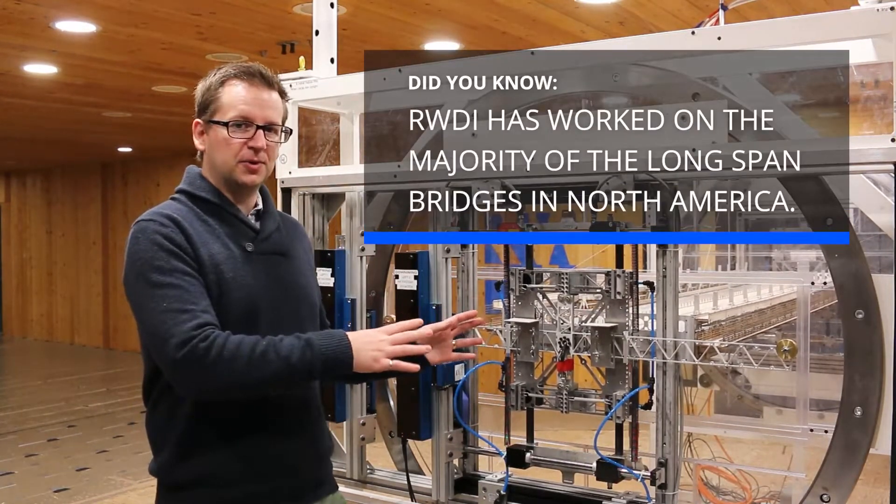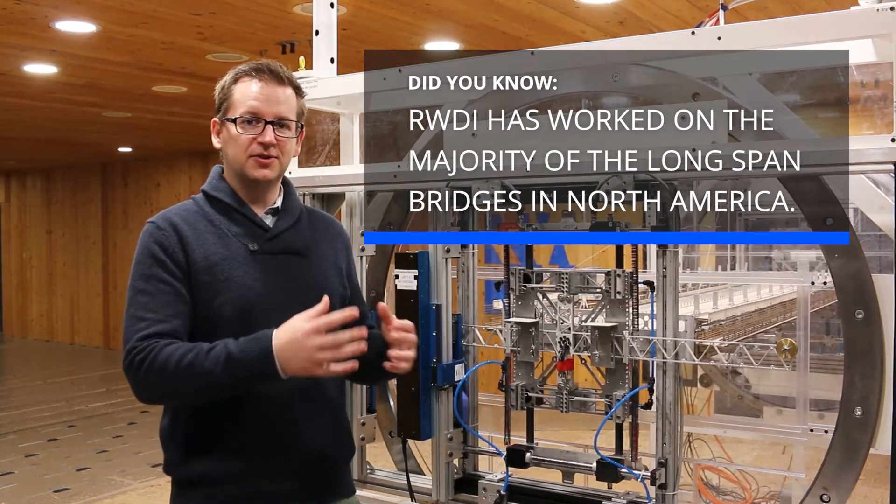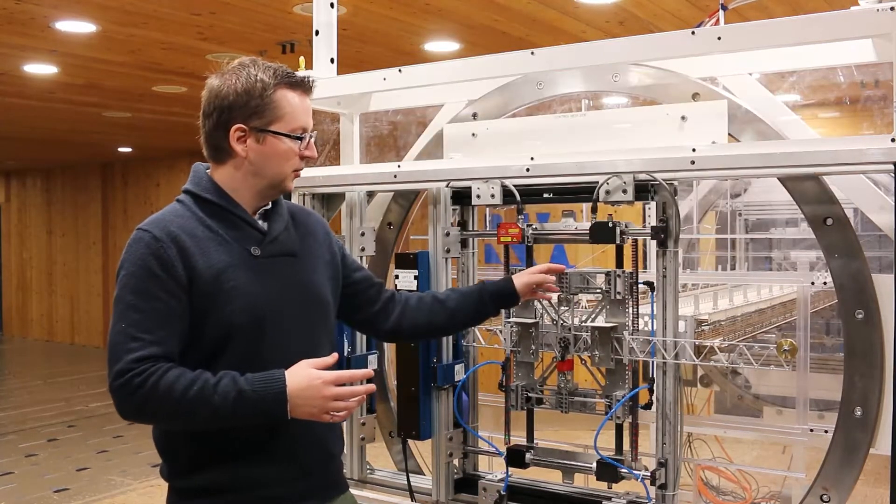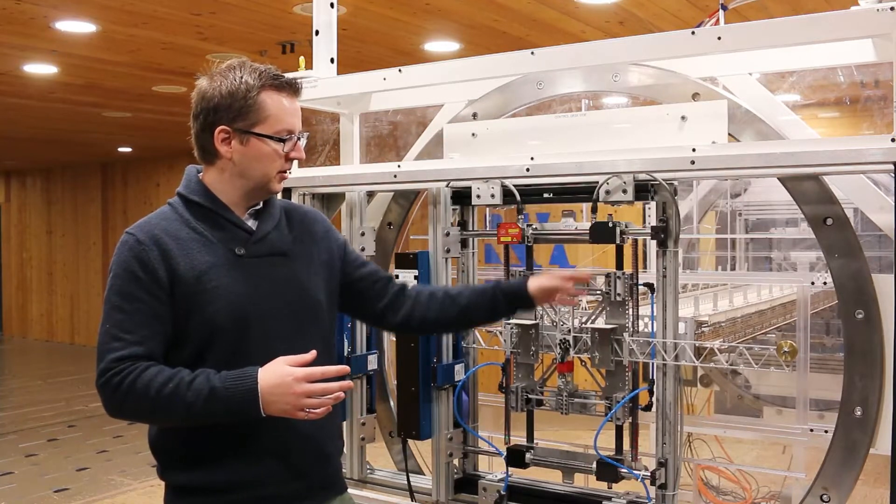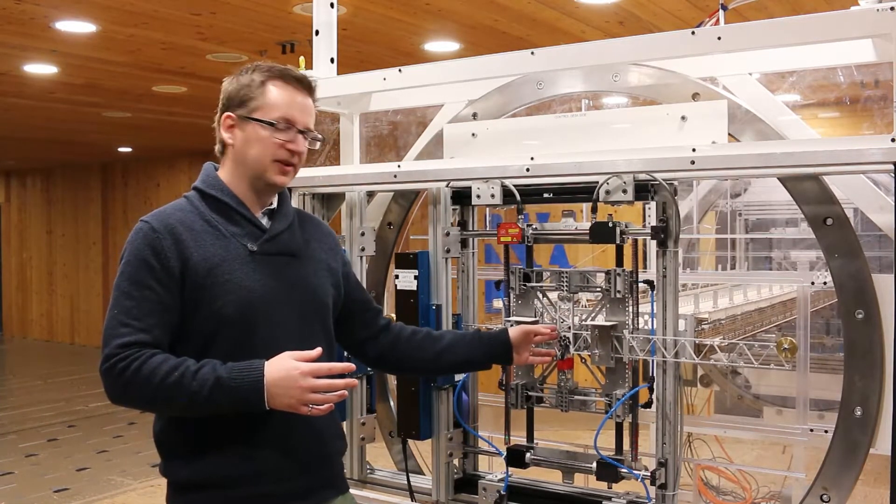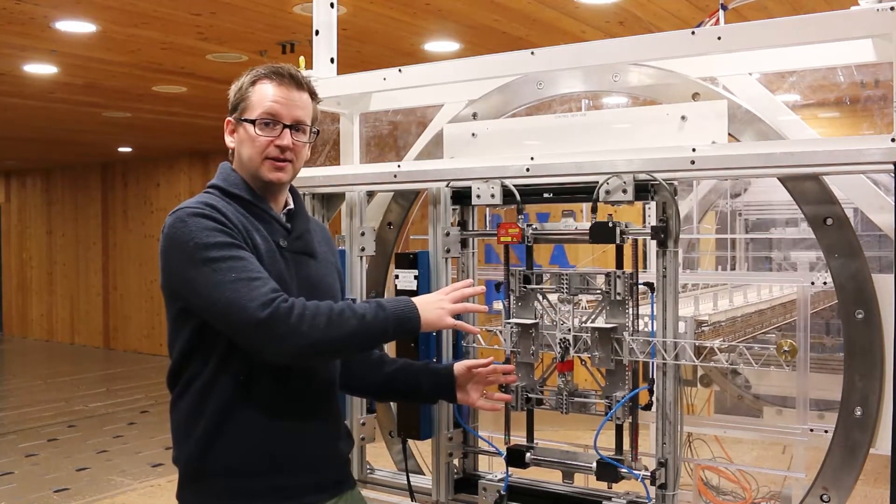What we're doing here is we're allowing the bridge to move freely. We want the wind and structure interaction to happen as it would in real life, and so we support these on springs and allow the motion on these air bearings so that there's very little damping in the system. We can actually control that damping through adding and removing magnets.